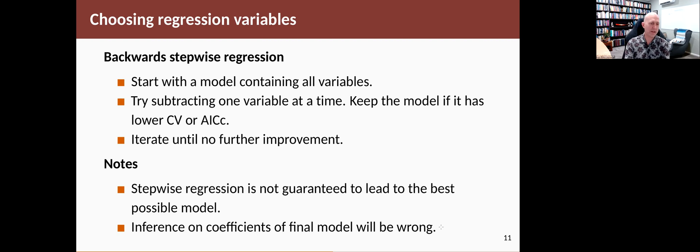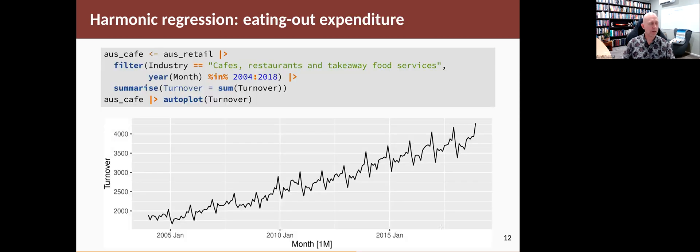I should note at this point that any type of selection of predictors means that you can't then look at the p-values of the coefficients or do the usual sort of statistical inference, because the process of variable selection invalidates the assumptions behind those tests. So when we're using variable selection for forecasting, you shouldn't also then look at the p-values or do statistical inference on the fitted model, because that will be misleading.